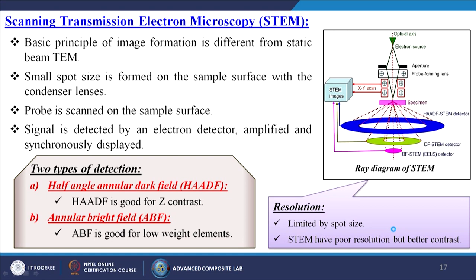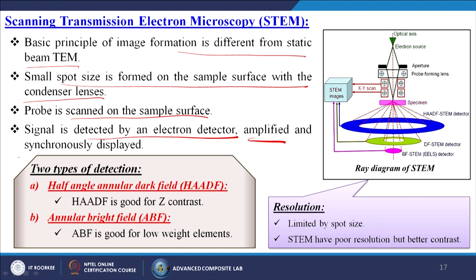Scanning transmission electron microscopy (STEM): the basic principle of image formation differs from static-beam TEM. A small spot size is formed on the sample surface with condenser lenses; the probe is scanned on the sample surface and the signal is detected by an electron detector, amplified, and synchronously displayed. Two detection modes: HAADF (half-angle annular dark field), good for Z-contrast, and ABF (annular bright field), good for low-weight elements. Resolution is limited by spot size, so STEM has poorer resolution but better contrast.